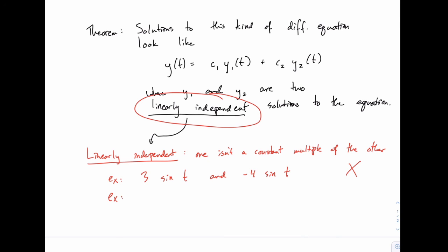For example, 2x and 4x squared, if we were using x as our independent variable, those would be linearly independent. Or for example, e to the 2t and e to the 3t. Those would also be linearly independent because one is not a constant multiple of the other.